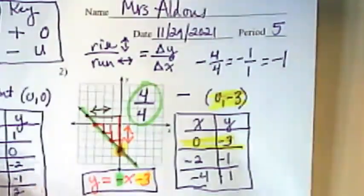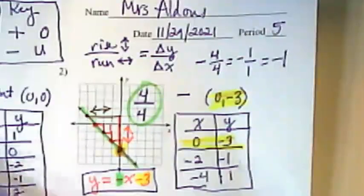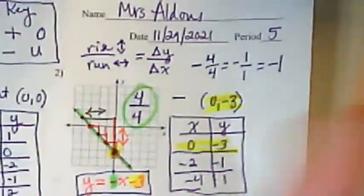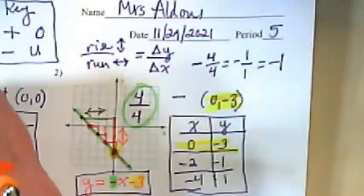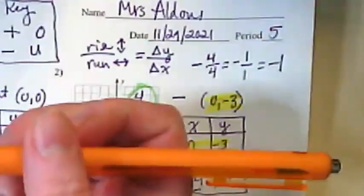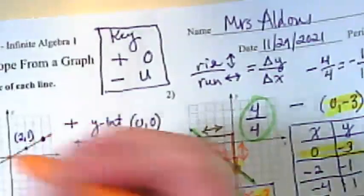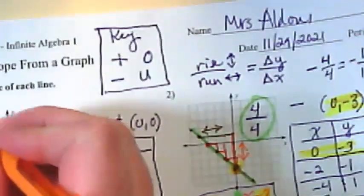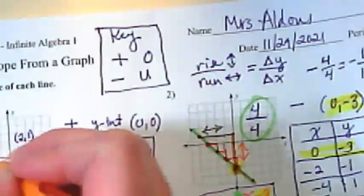So let's go try that with this equation, or this line, see if we can find its equation. I again want to find my rise and my run. I'm just going to rise up to the next point this time and run over and I rose up 1 and I ran over 2.